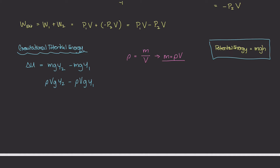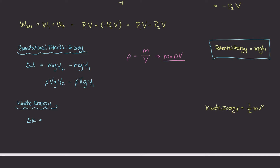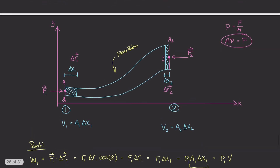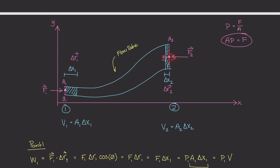Now for the kinetic energy: from physics we know kinetic energy equals one-half m times lowercase v squared, where lowercase v is velocity. For our delta-k term, that is going to be the change in kinetic energy — the difference between points 2 and 1 — so we need one-half m·v2² minus one-half m·v1². These lowercase v's stand for the velocity of the fluid flowing through that cross-sectional area.